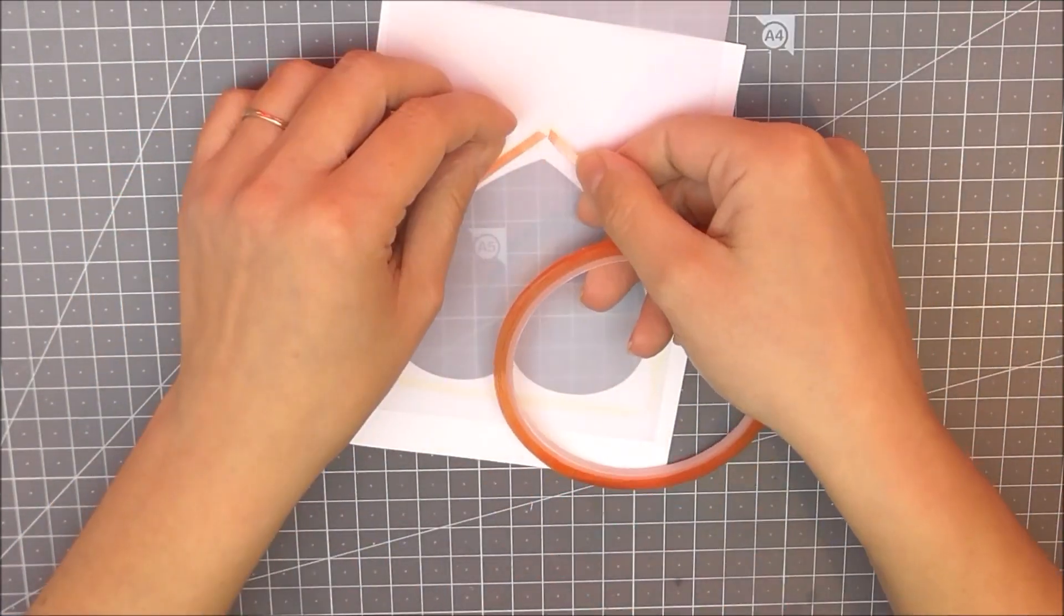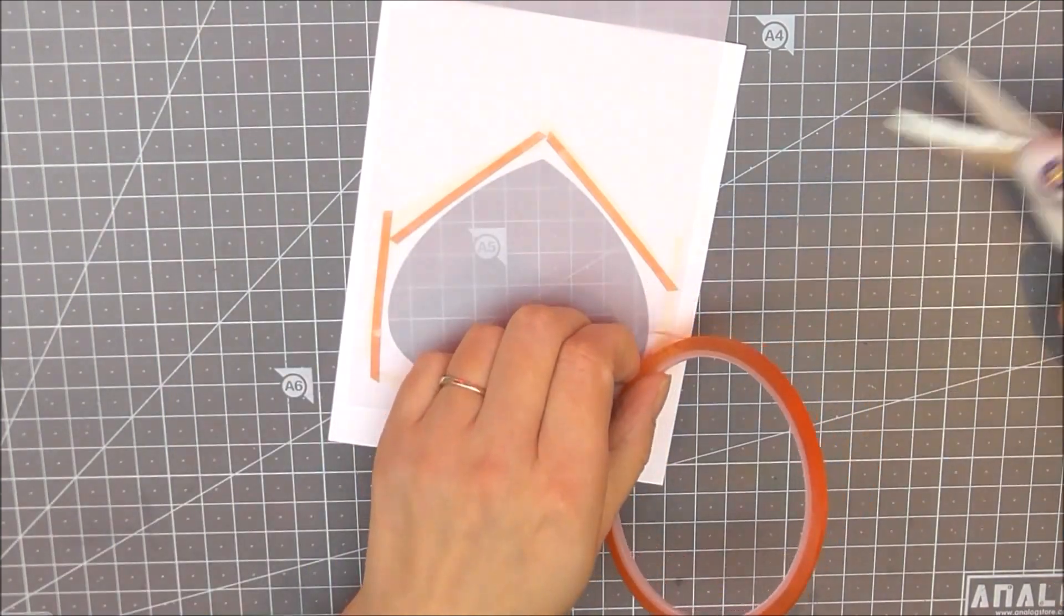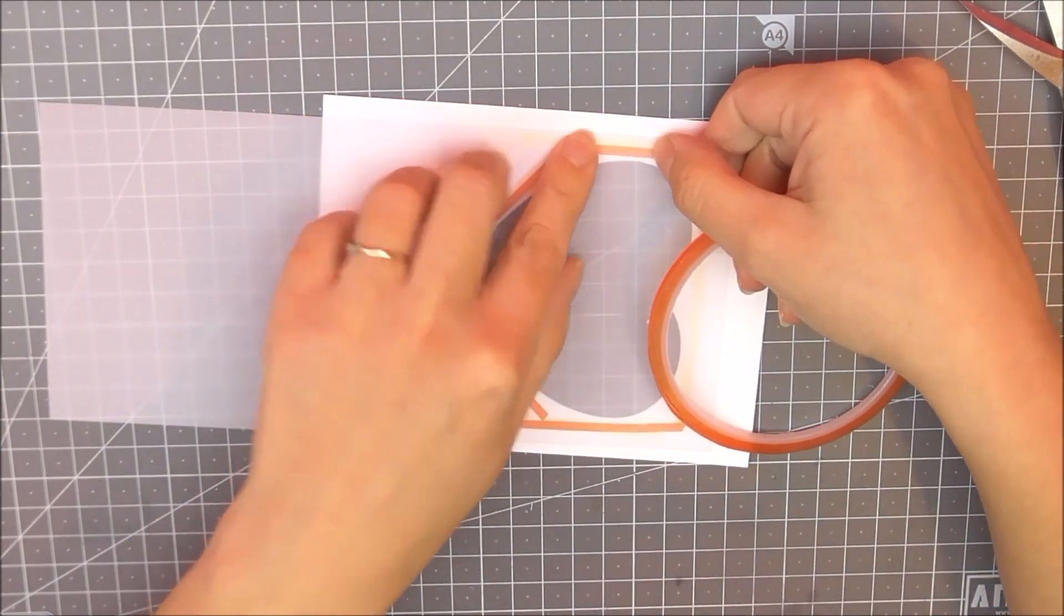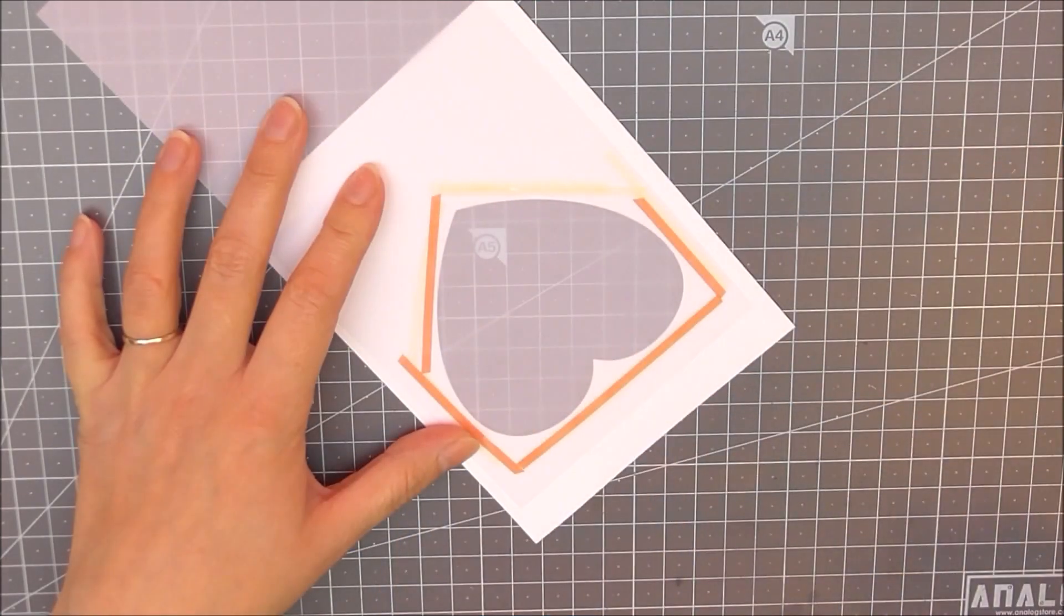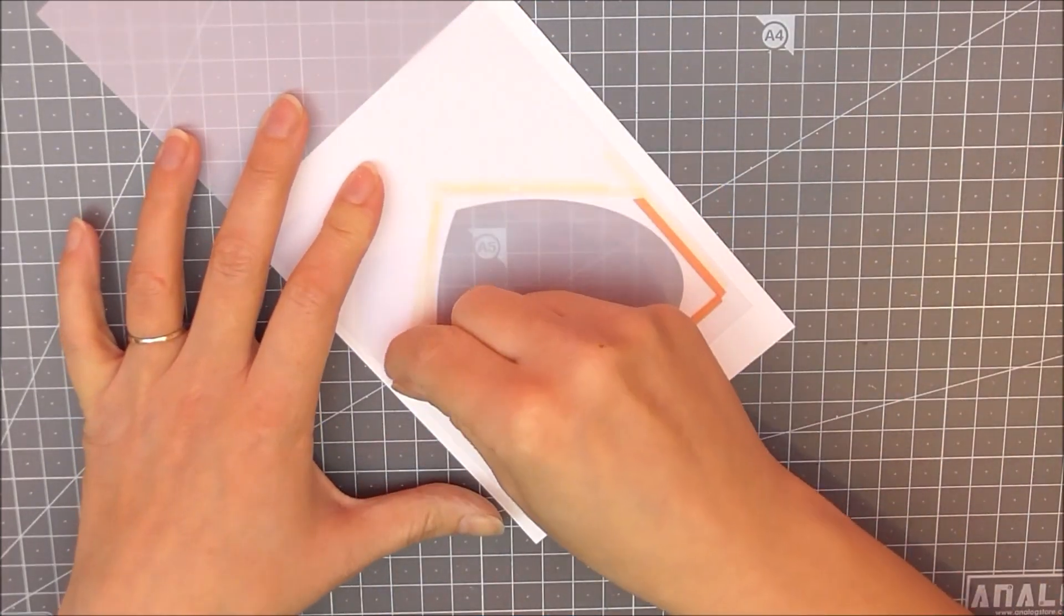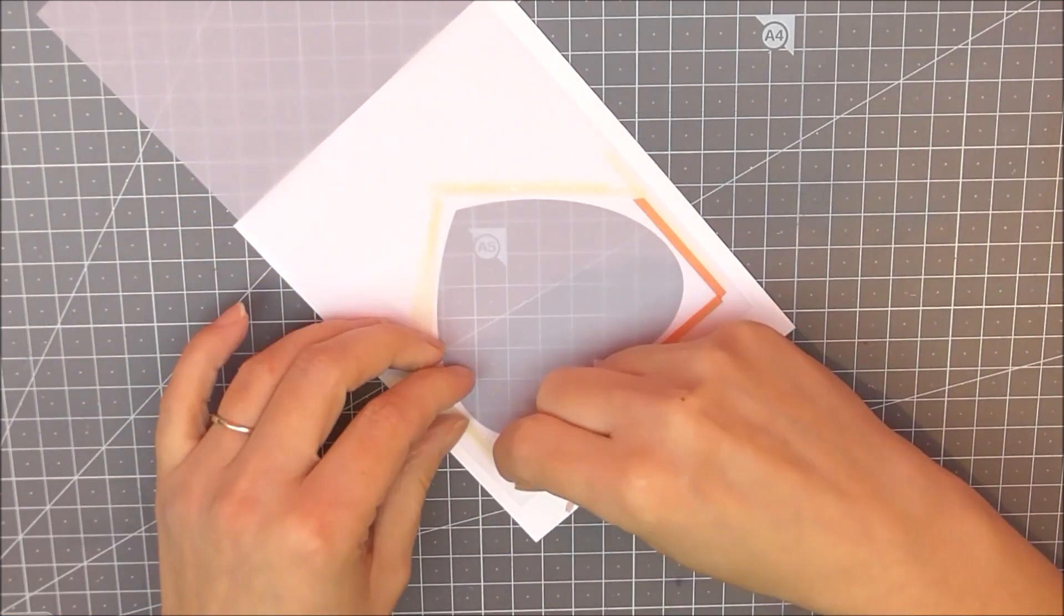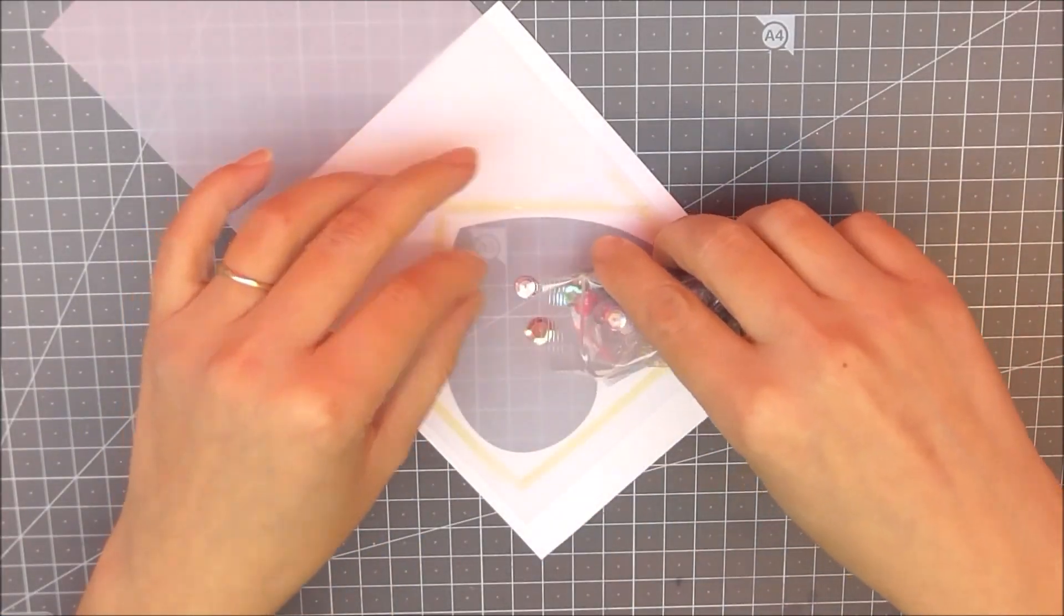I'm then going to add some more glue tape, this time being really careful that the glue touches each edge. It does need to touch so the sequins that we pop inside don't fall out - make sure that it all touches so nothing can escape out of this little window later on.